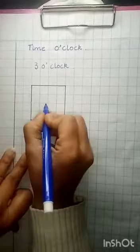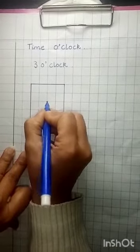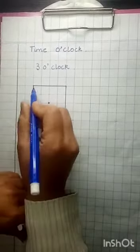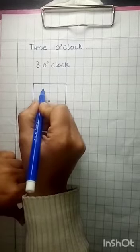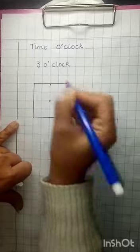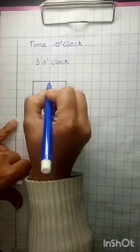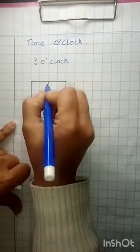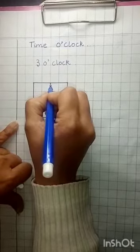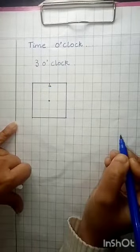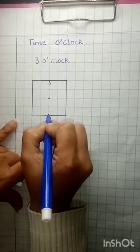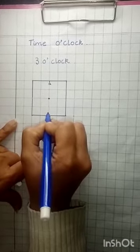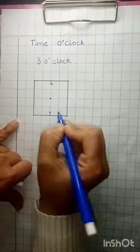So here in the middle you have to put a dot. So here on the top you have to leave 1, 2 blocks, and here in the middle you have to draw a small line. And here we will write 12. And right below this 12 we will draw another line and we will write 6 over here.